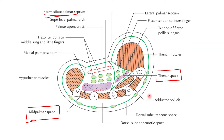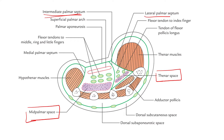The posterior relation of the thenar space is the adductor pollicis muscle. Medially, it is related to the intermediate septum which separates it from the hypothenar space, and laterally it is related to the lateral palmar septum. This thenar space communicates proximally with the forearm space of Parona, whereas distally the space communicates with the fascial sheath of the first digit.